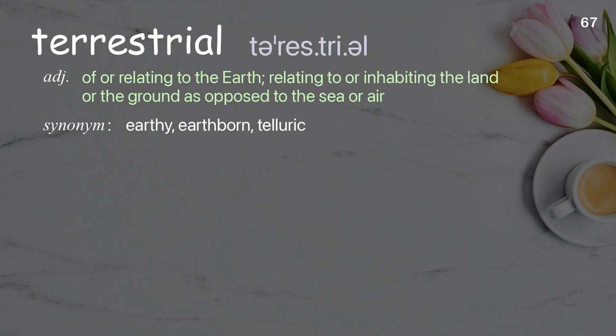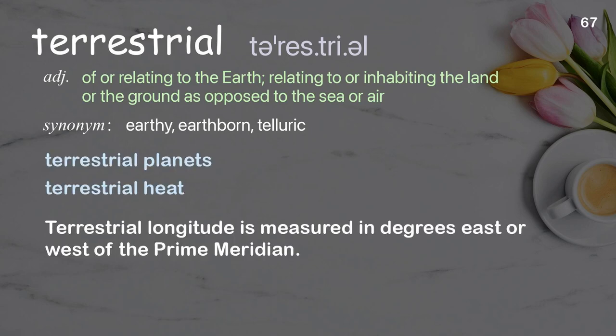Terrestrial: of or relating to the earth; relating to or inhabiting the land or the ground as opposed to the sea or air. Examples: terrestrial planets; terrestrial heat. Terrestrial longitude is measured in degrees east or west of the prime meridian.